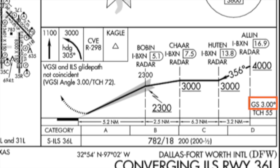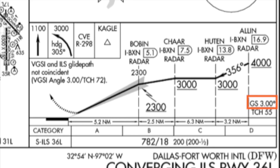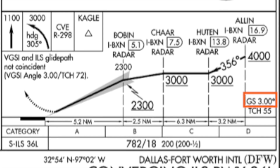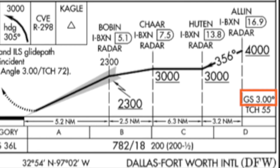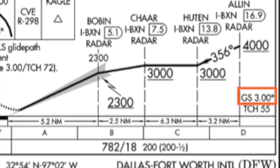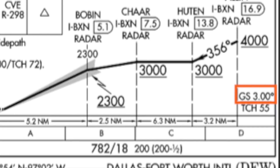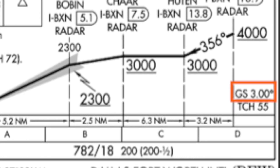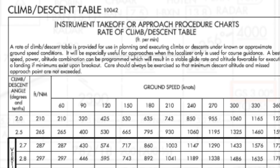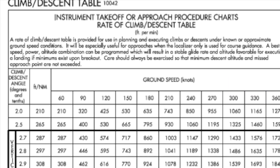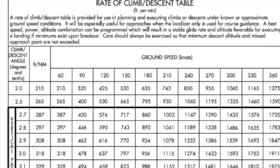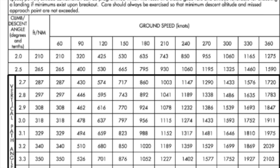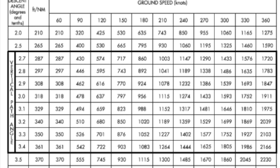3 degrees is very common with most approaches located in relatively flat terrain with no obstacles. However, don't assume you'll always have situations with a 3 degree glide slope. Especially in mountainous areas or with obstacles, the 3 degree angle may no longer be used. With the next provided figure, we are looking at the rate of climb and descent table, which oftentimes will come in very handy and eliminate the need for additional manual calculations.